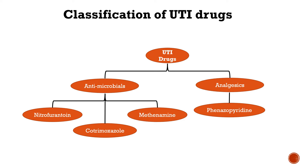Next we will discuss classification of drug treatment for urinary tract infection. UTI drugs are classified into two categories: antimicrobial drugs and analgesics. Antimicrobial drugs are subdivided into three drugs: Nitrofurantoin, Methenamine, and Cotrimoxazole. Cotrimoxazole acts as an adjuvant therapy for UTI, and some physicians also prescribe nalidixic acid. UTI analgesics include phenazopyridine.